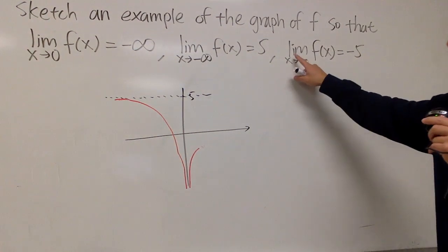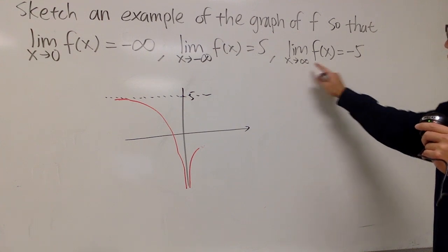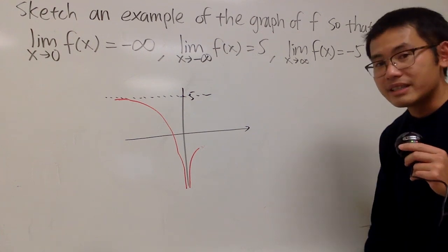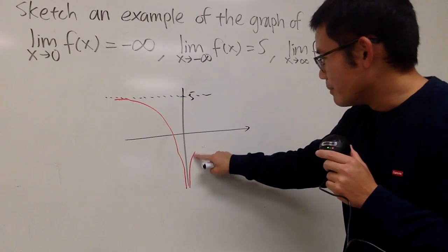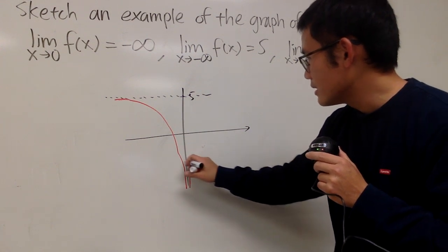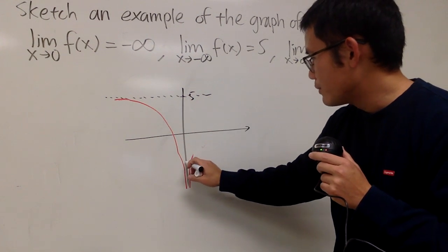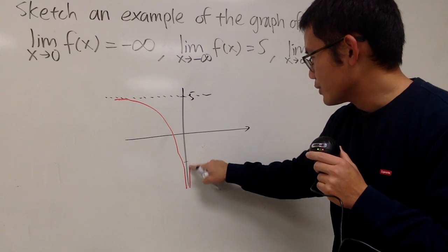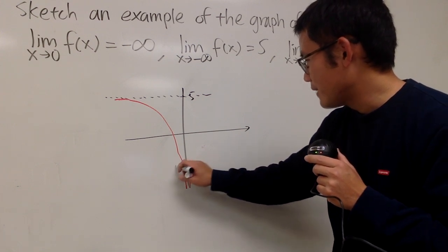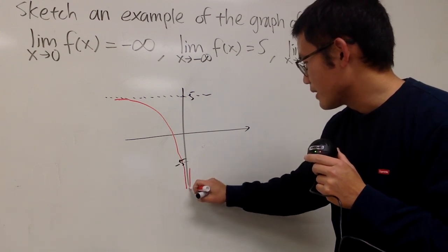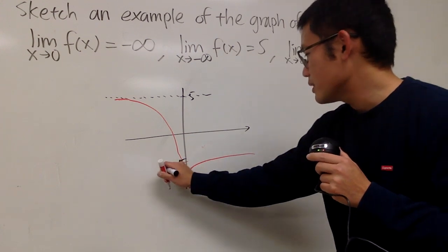When we have the limit as x approaching positive infinity, we end up with negative 5. So perhaps I should make this a bit smaller. Let's say this is negative 5 right here. I'll do something like this. So here is my negative 5, and I'll do the graph like this.